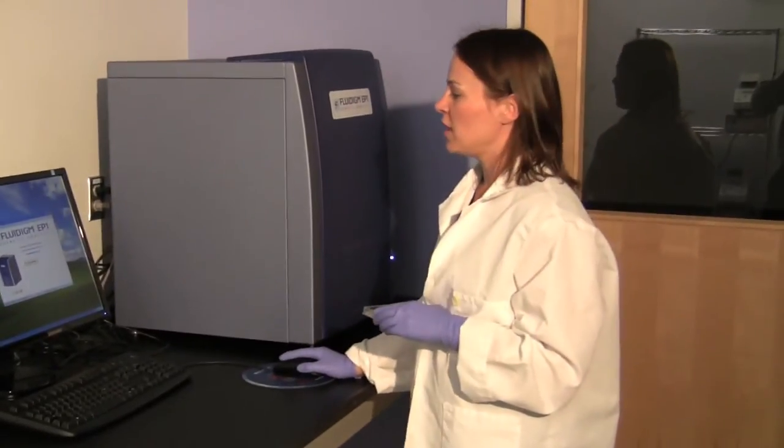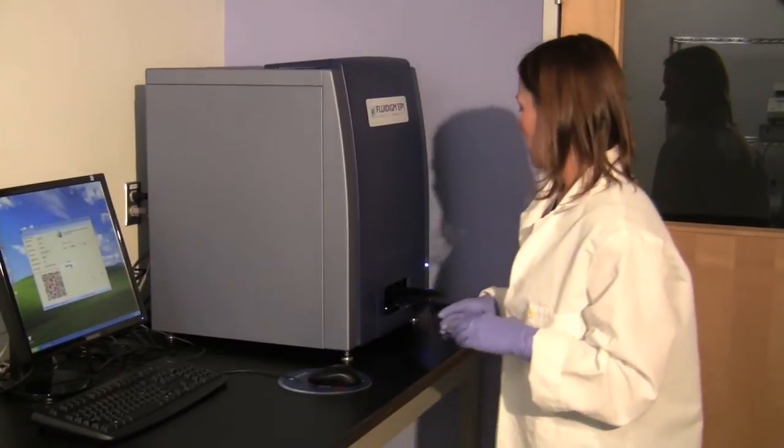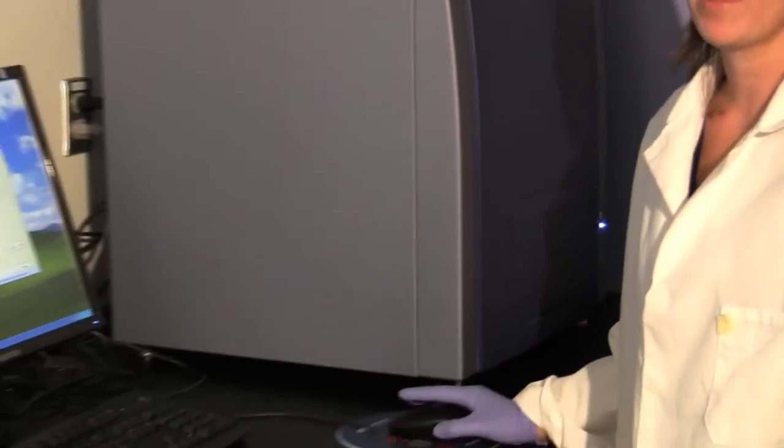So in order to start a run on the EP1, I will just click start a new run. The tray will open. I will place the chip on the tray and choose the load button. The barcode of the chip will be read by the instrument.